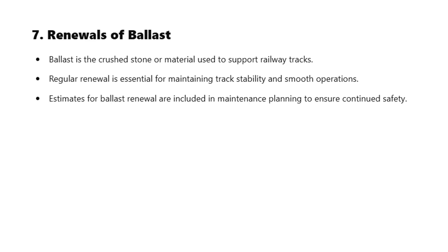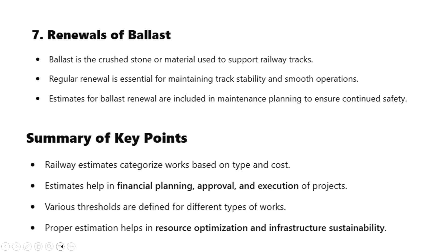Category 7: Renewals of Ballast. Ballast is the crushed stone or material used to support railway tracks. Regular renewal is essential for maintaining track stability and smooth operations. Estimates for ballast renewal are included in maintenance planning to ensure continued safety.